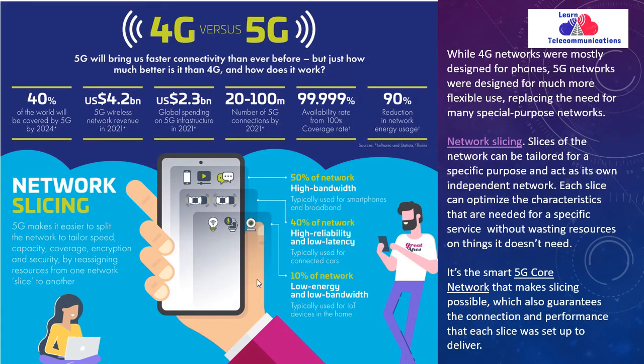One of the key features of a 5G network is network slicing. A single network can be used for offering various services based on the requirement of users or various use cases. Network operators can allocate the right amount of resources per network slice — for example, one slice can be designed for low latency and low data rates, while another can be configured for high throughput. This helps operators reduce operational expenses as well as capital expenditures.